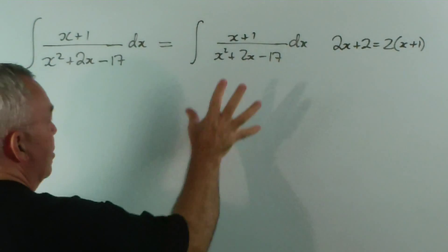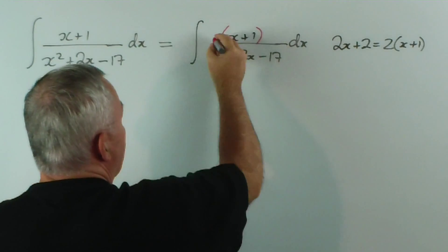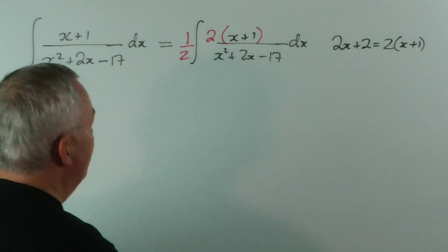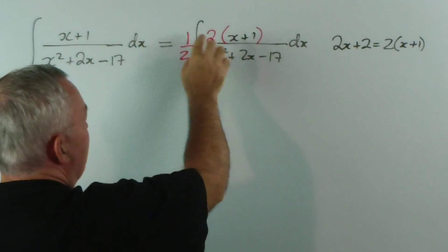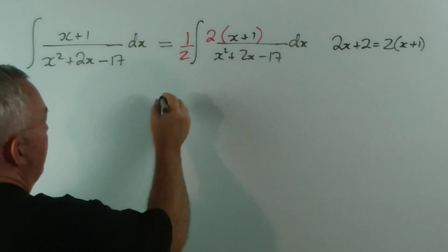And to make sure that we had the right pattern, we would need to multiply this by 2 and to compensate by dividing by 2 out the front. A half of 2 is 1. It's not going to make any difference to the value of the integral.